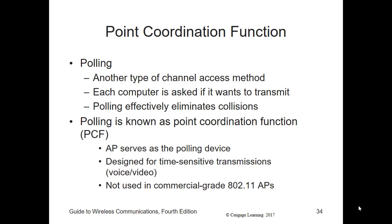Another type of channel access is polling. With this method, each device is sequentially asked by the AP if it has anything to transmit. After associating with the AP, devices cannot transmit unless they are polled. If the device has something to transmit, it sends a positive response to the AP; if not, it sends a null data frame — kind of like a blank token. Then the next device in sequence is polled, similar to token ring.